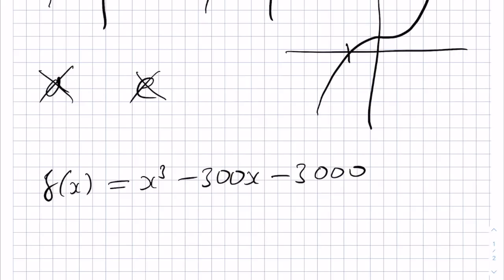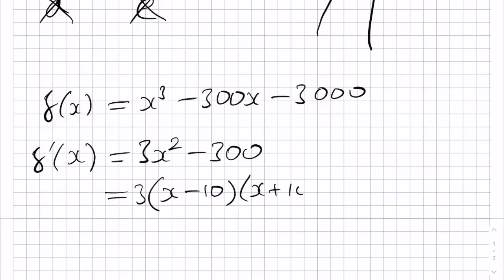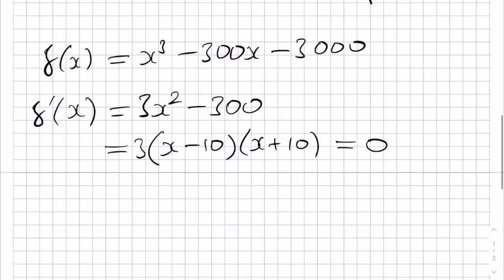because then we can look at how the graph turns, and this can tell us how many roots the equation has. So if we determine f'(x), this will be 3x² - 300, and we can factorize this as 3(x - 10)(x + 10). So if we're looking for the turning points, we want f' = 0, and so we have x = 10 or x = -10 for the turning points.